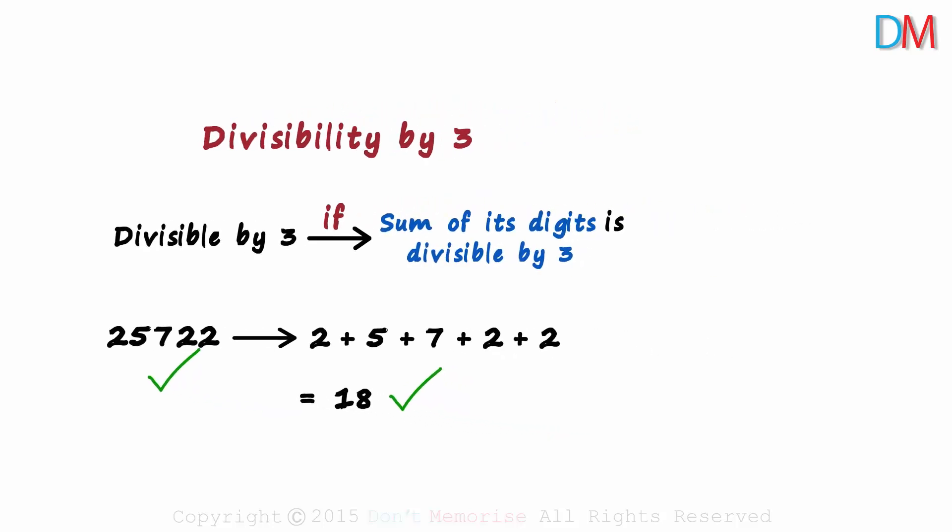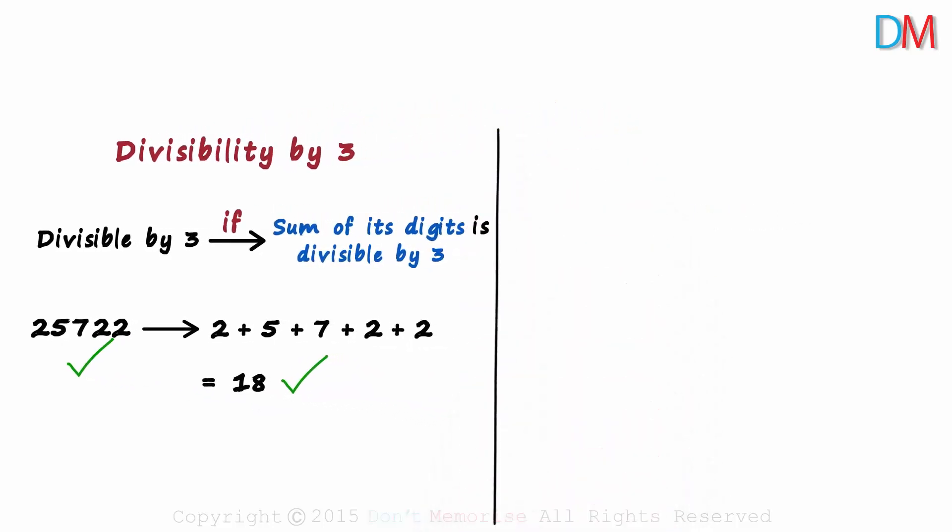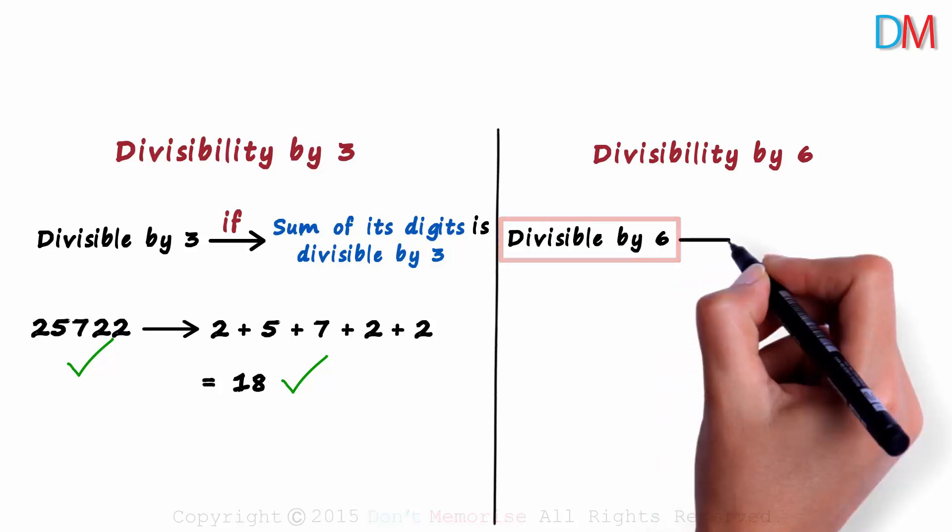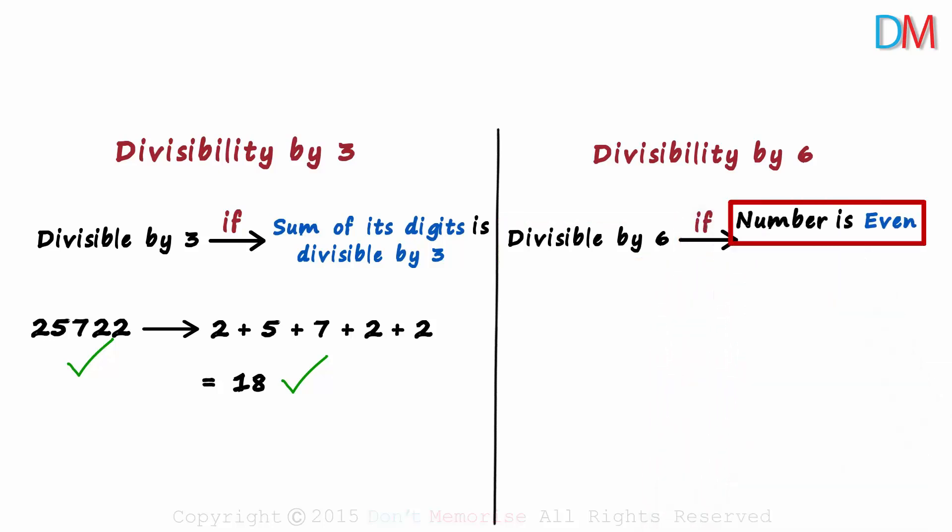Let's zoom out and understand another divisibility rule. Divisibility by 6 is not the simplest, but it's definitely very interesting. There are just two simple conditions. We can say that a number is divisible by 6 if the number is even and is divisible by 3. Both these conditions have to be satisfied.